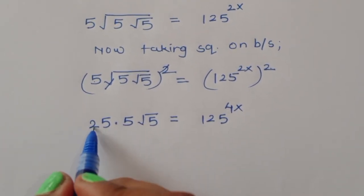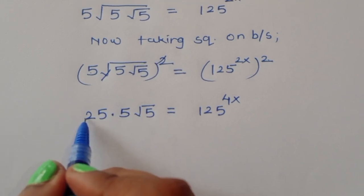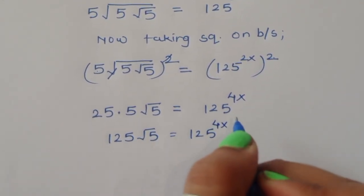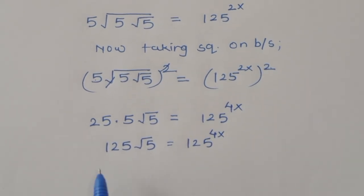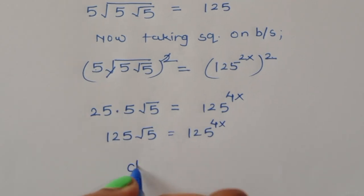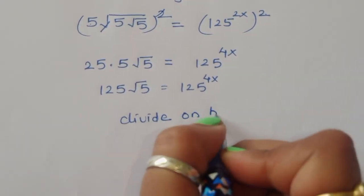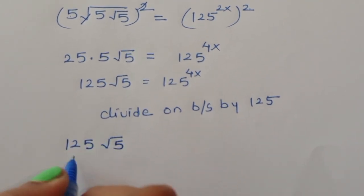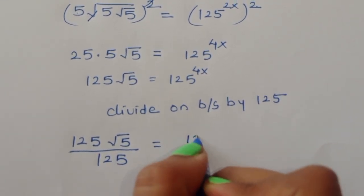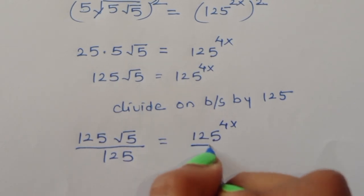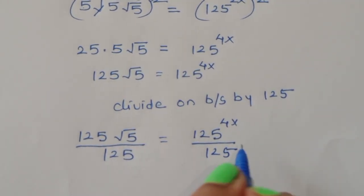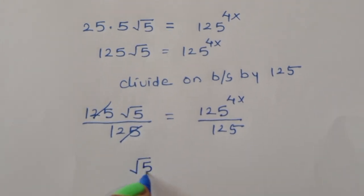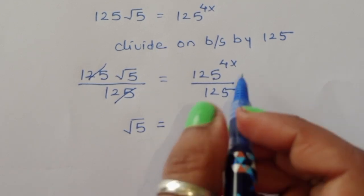Now we got this value. 25 times 5 to the one-half — so 125 times square root of 5 is equal to 125 power 4x. Now we have to cancel the 125, so we divide both sides by 125. This 125 cancels that 125, so we are left with square root of 5 is equal to 125 power 4x minus 1.